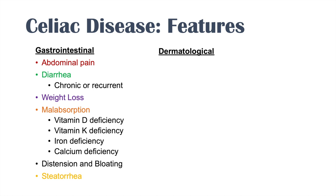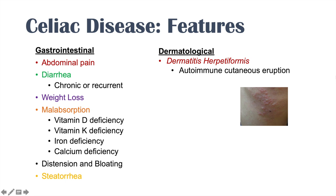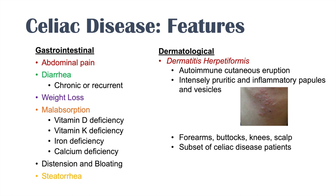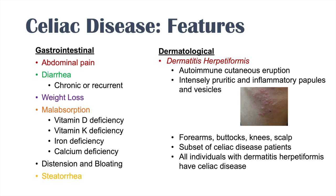There are also dermatological features with celiac disease. Dermatitis herpetiformis is a skin condition that a subset of celiac disease patients can get — an autoimmune cutaneous eruption of intensely pruritic inflammatory papules and vesicles, most often found on the forearms, buttocks, knees, and scalp. Importantly, all individuals with dermatitis herpetiformis have celiac disease, but not all celiac disease patients have dermatitis herpetiformis.